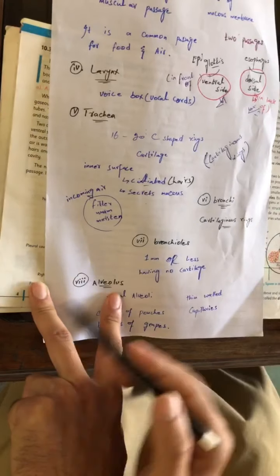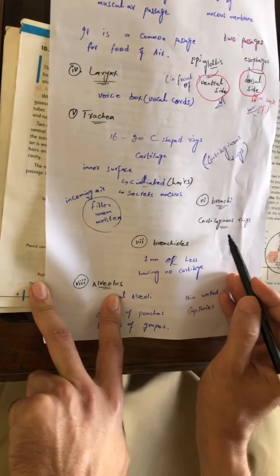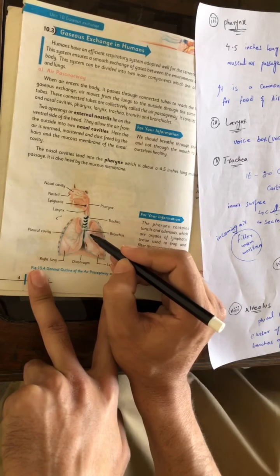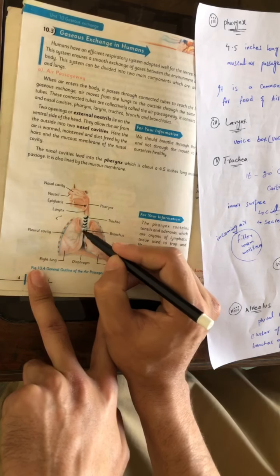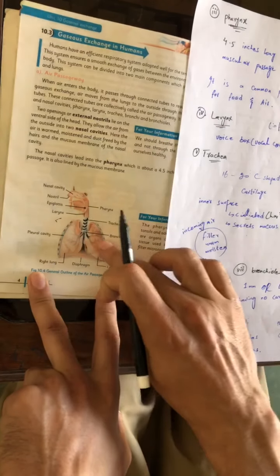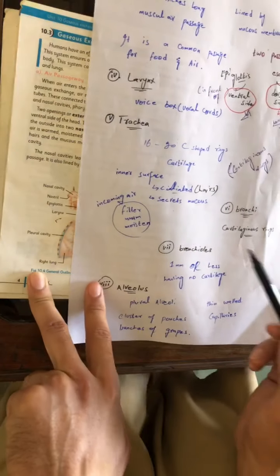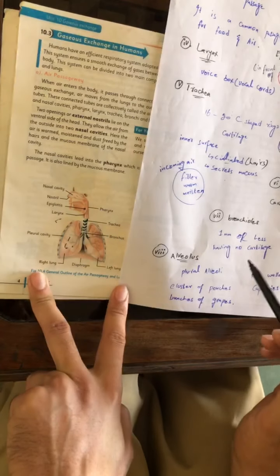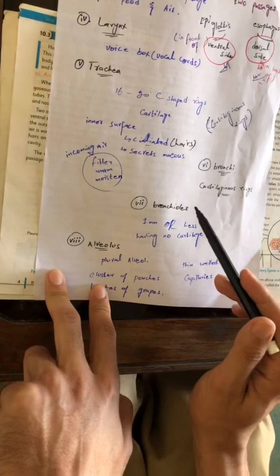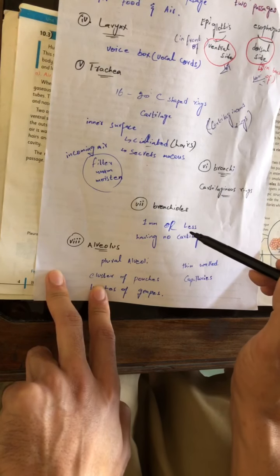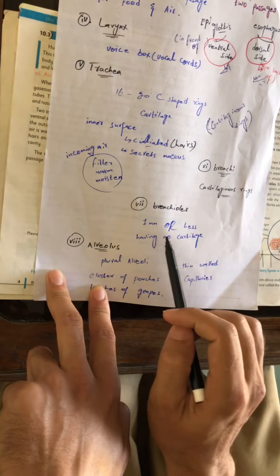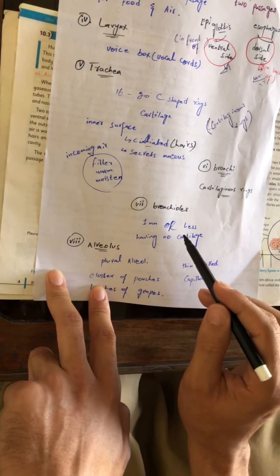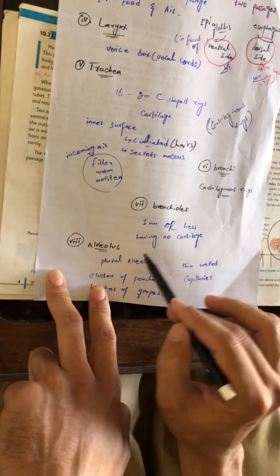The next one is bronchi. Bronchi are cartilage structures. When trachea comes here, it branches into left and right bronchi. When the bronchi enter the lungs, they divide and subdivide. These are bronchioles. When the diameter of the branches becomes less than 1 mm, they are called bronchioles. Bronchioles have no cartilage.